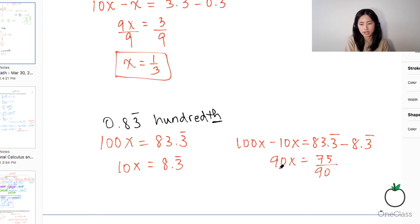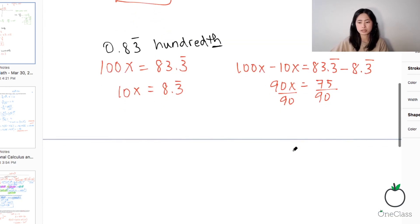Dividing both sides with 90. So 75 divided by 90. This is x is equal to 5 over 6. Yeah, so x is equal to 5 over 6.